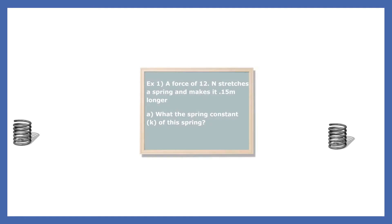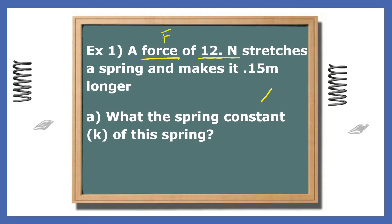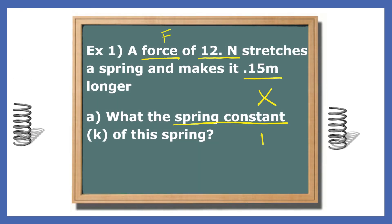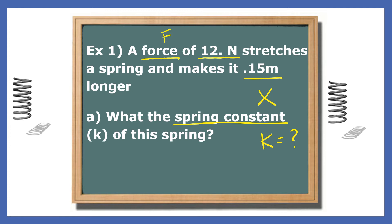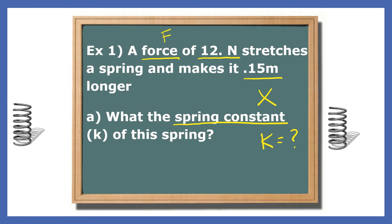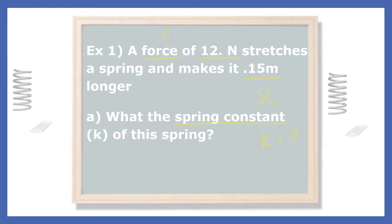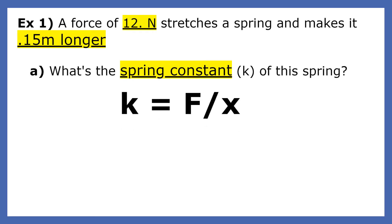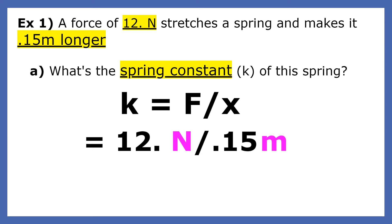A force of 12 newtons stretches a spring and makes it 0.15 meters longer. What is the spring constant, k, of this spring? Since the spring constant is the ratio of f to the stretch it produces, we get k equals 80 newtons per meter.